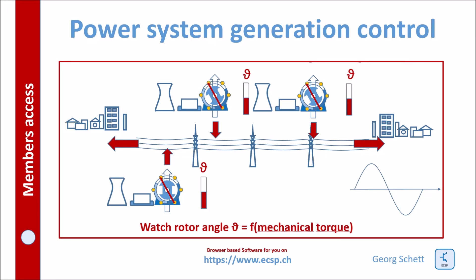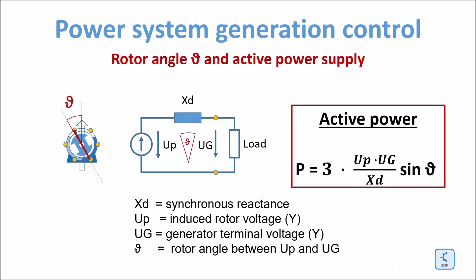Hello. Today we want to talk about how active power output of generators can be controlled in a power system. The key to control the real power output of a generator is the so-called rotor angle theta.